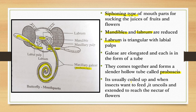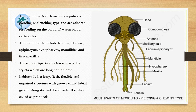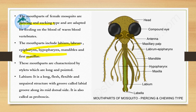The function of the proboscis is to reach the nectar of flowers and to suck. Now the mouthparts of the female mosquito are of piercing and sucking type, adapted for feeding on blood. The mouthparts include labium, labrum, epipharynx, hypopharynx, mandible, and first maxilla. Mouthparts are characterized by stylets, which are long and pointed.